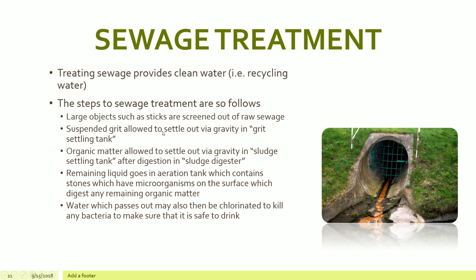We need to treat sewage — so how do we do that? First, large objects like sticks are screened out of the raw sewage. The suspended grit is then allowed to settle through gravity in a grit settling tank. Organic matter is allowed to settle via gravity in the sludge settling tank after digestion in the sludge digester. The remaining liquid goes into an aeration tank containing stones with microorganisms on the surface that digest any remaining organic matter. The water may then be chlorinated to kill any bacteria, making it safe to drink.